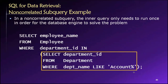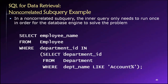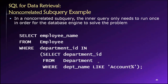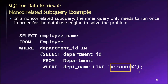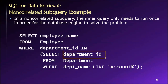What does the inner query do? It's asking for department IDs — the result will be a list of department IDs. The database is told to look in the department table, and specifically the department IDs associated with department names that begin with 'account.' This could be accounting, accounts payable, accounts receivable — whatever it may be. Those matching department IDs will be returned from this inner query.